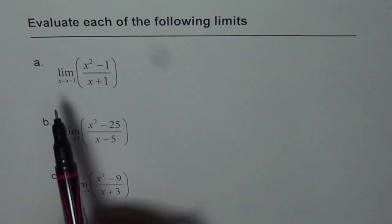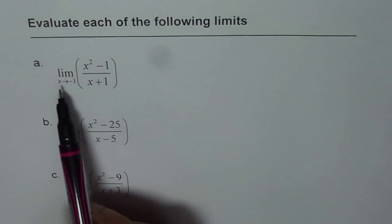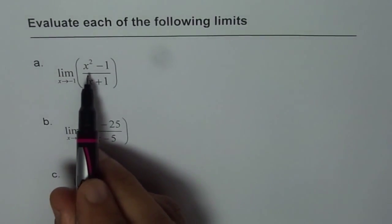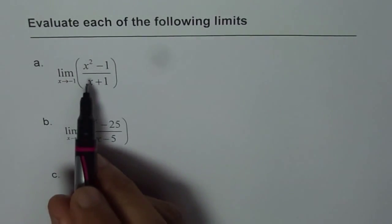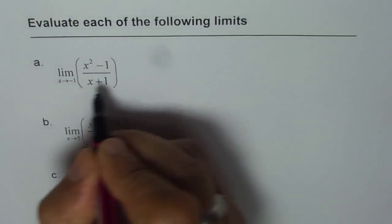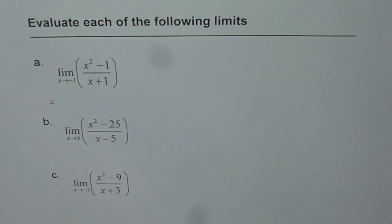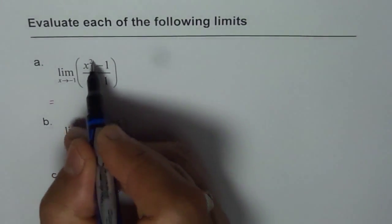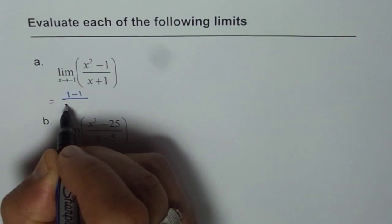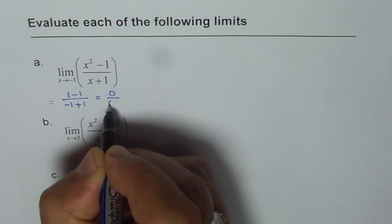Let's begin with the first one: the limit of x squared minus 1 divided by x plus 1 as x approaches minus 1. If I substitute minus 1 in the given function, what do I get? Minus 1 squared is 1, so I get 1 minus 1 divided by minus 1 plus 1, which is 0 over 0.